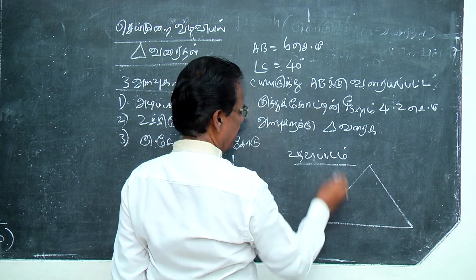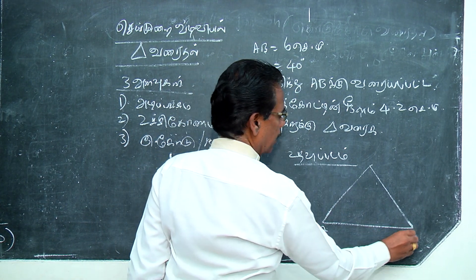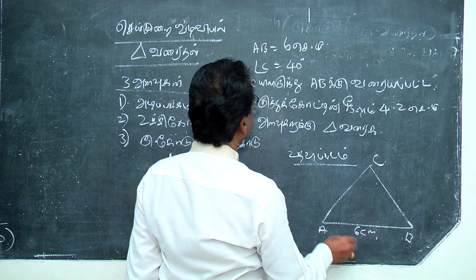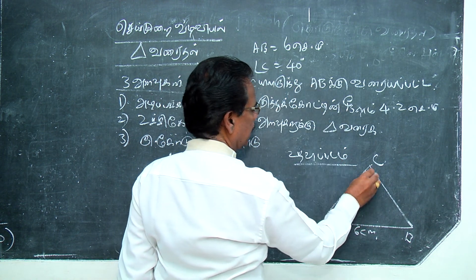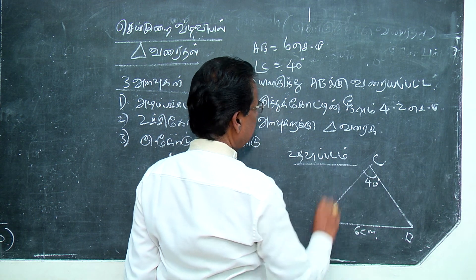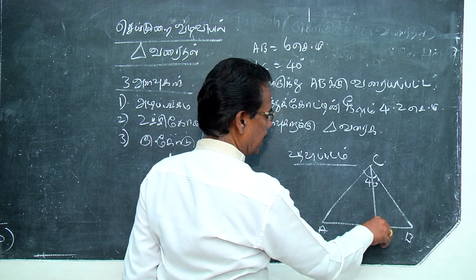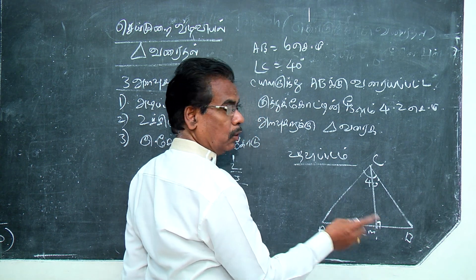That's 6 cm, this is C. So this is 4 cm. Now you can see the C and C. It's not like the C and C and C.